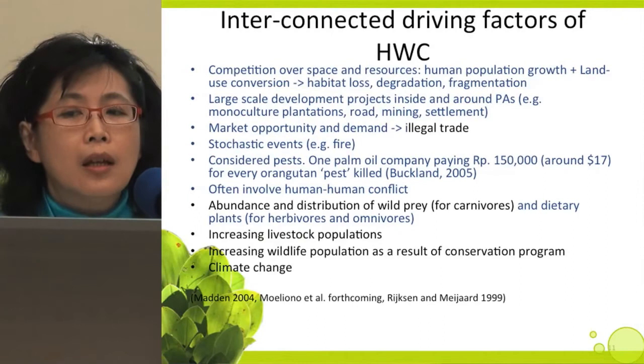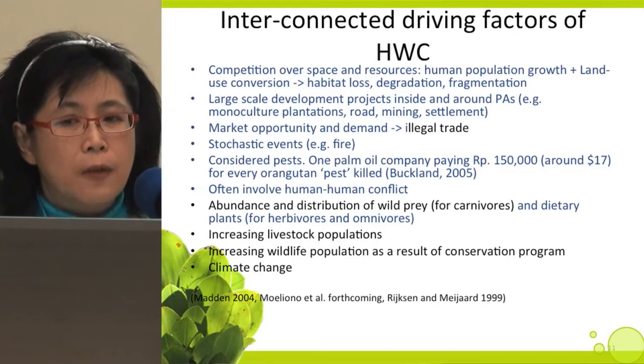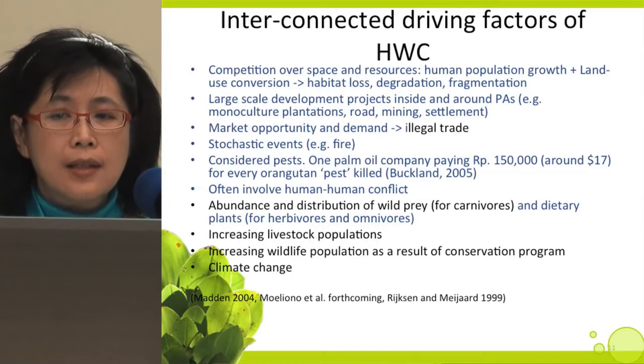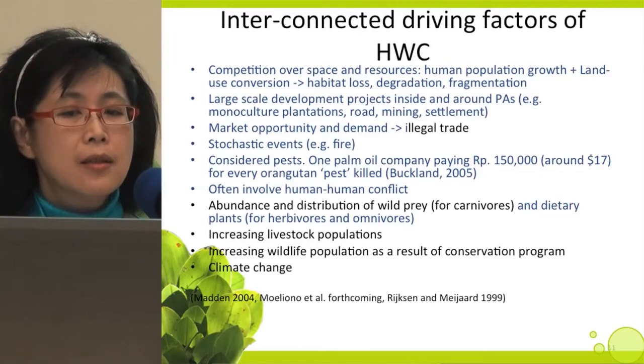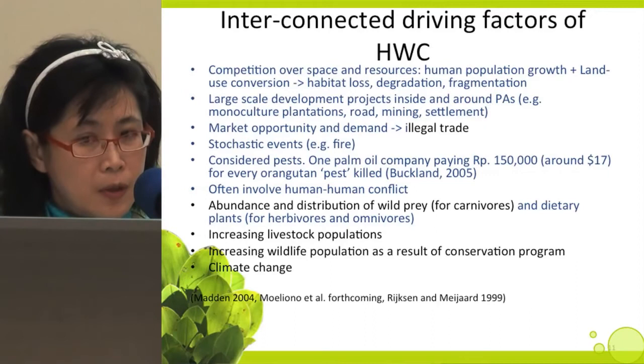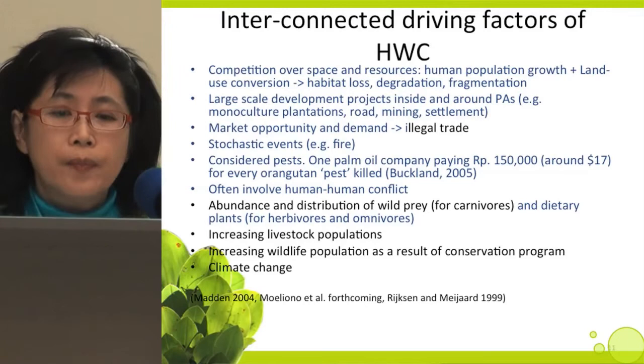The compilation of reports on interconnected driving factors of human-wildlife conflict: blue ones are directly related to orangutans while black ones are not. First, competition over space and resources, interconnected with increasing human population growth plus land use conversion, leading to habitat loss, degradation, and fragmentation. Third, large-scale development projects inside and around protected areas — for example, monoculture plantations, most notably oil palm plantations, roads, mining, settlements. Market opportunity and demand has led to illegal trade. Stochastic events such as fire also play a role.